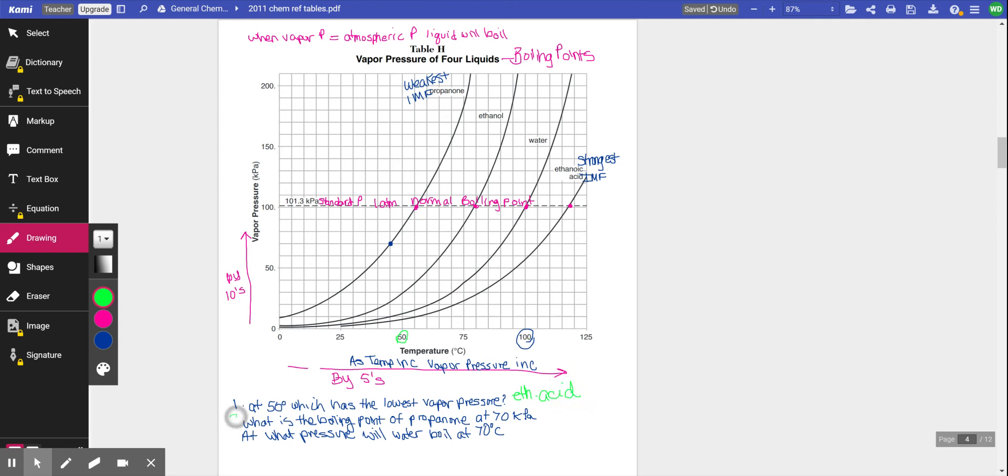Okay, so now question number two over here. What is the boiling point of propanone at 70 kilopascals? So I have to find 70 kilopascals. So that's 50, 60, 70. So 70 kilopascals. And I'm going to read this. Oops, can't draw this very straight. And propanone. So propanone. So where does that intersect here? And I'm going to read this straight down. So then that is one below 50. This was by five. So 45 degrees.